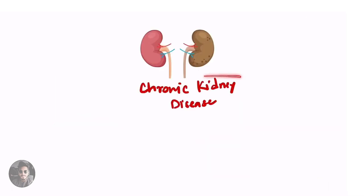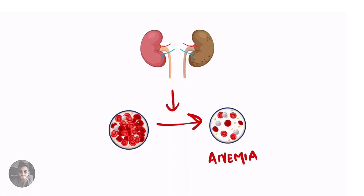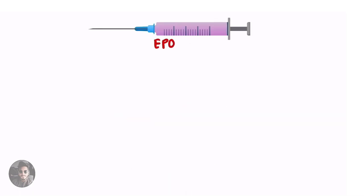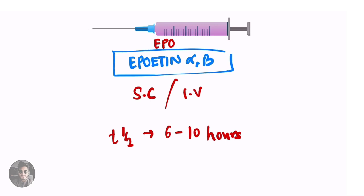In conditions like chronic kidney disease where the kidneys are non-functional there is decrease in EPO secretion which leads to anemia. And then here comes the role of exogenous EPO which is known as epoetin alpha beta. It can be used subcutaneously or intravenous. It has a t half of 6-10 hours.